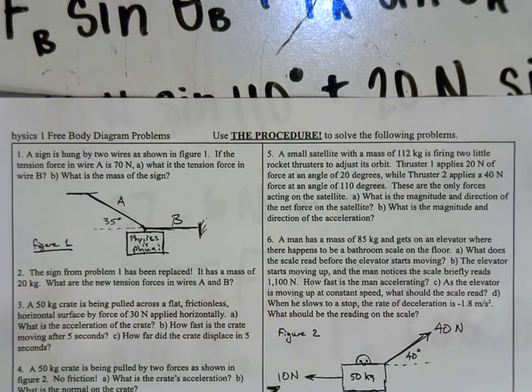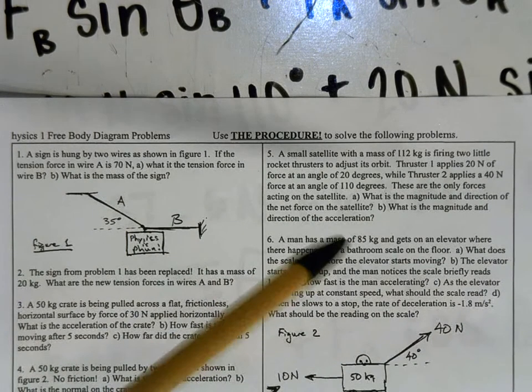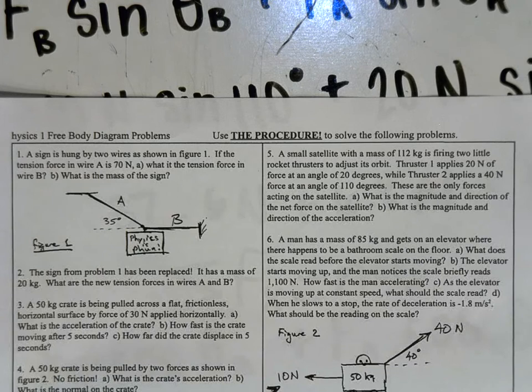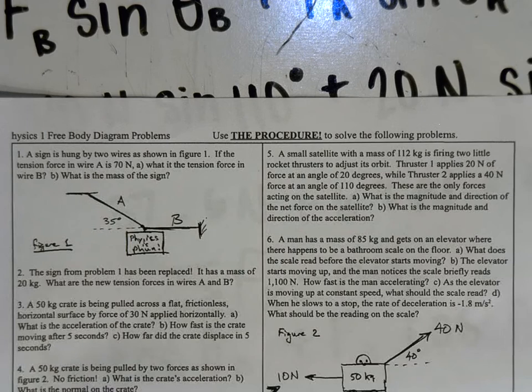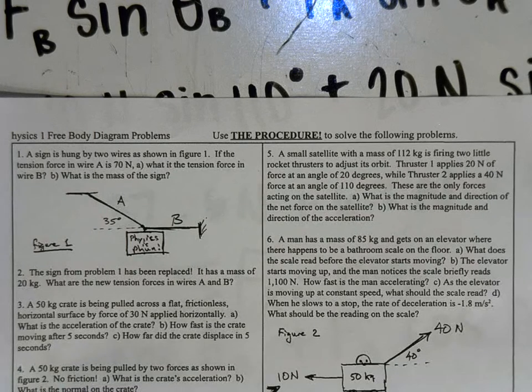Okay, let's do problem number five of the free body diagram problems. It says a small satellite has a mass of 112 kilograms. It's firing two small rocket thrusters to adjust its orbit. Thruster one applies a 20 Newton force at an angle of 20 degrees, while thruster two applies a 40 Newton force at an angle of